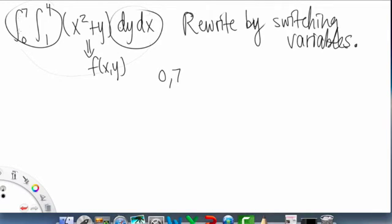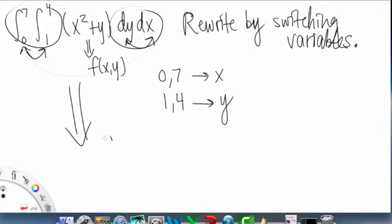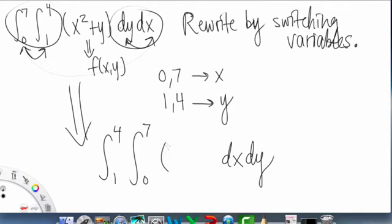So as you can see on the outside, the 0 and the 7, this interval here, corresponds with X stuff. And the 1 and the 4, which are on the inside, with the DY, that corresponds to Y stuff. So if we switch these ones, then we basically just have to switch these as well. So that's the whole concept behind this problem. So what we're going to end up with is 1 to 4. So this is Y stuff. So Y stuff has to be on the outside. And then we have 0 to 7. So then we have DX here. And then as I said before, the F of X, Y, that just stays in the same place and is pretty much unaffected as of now. So this would be our answer.